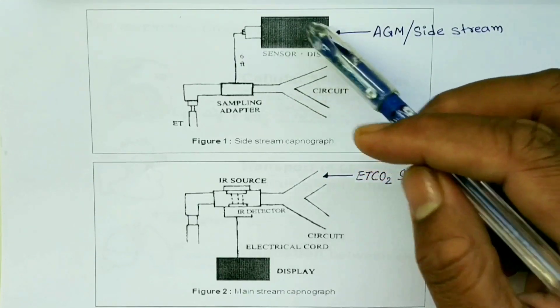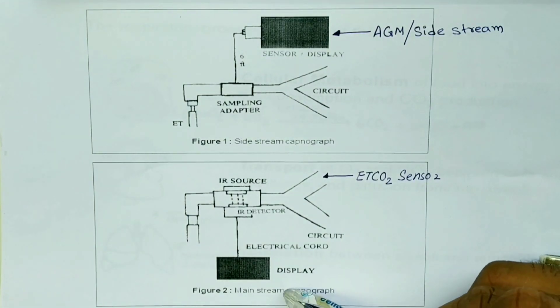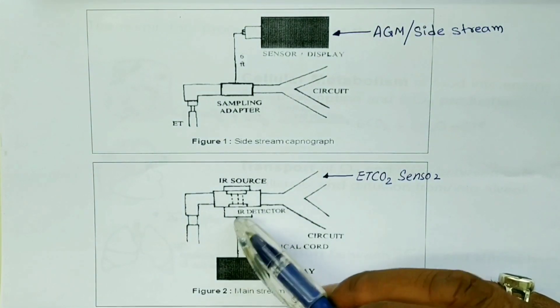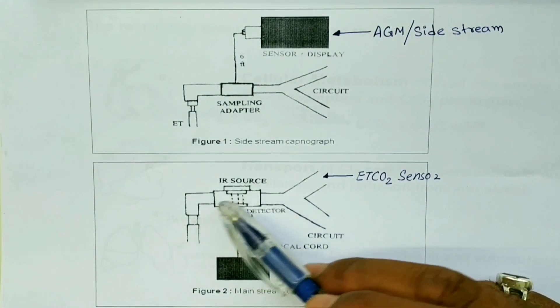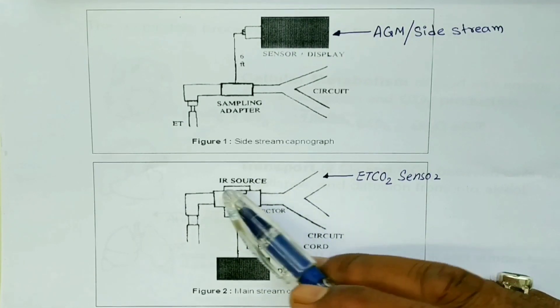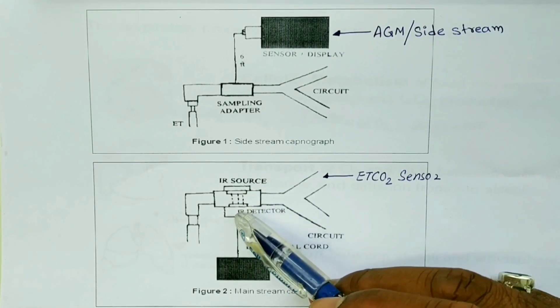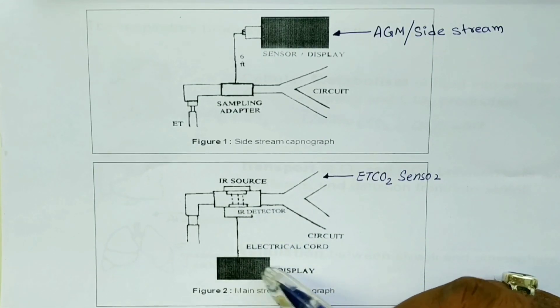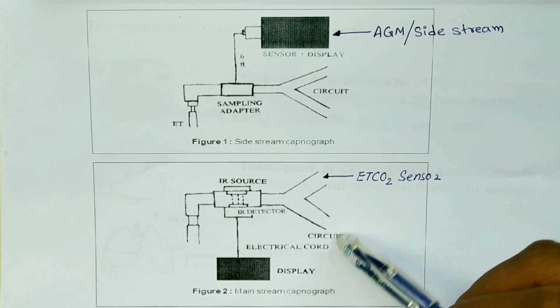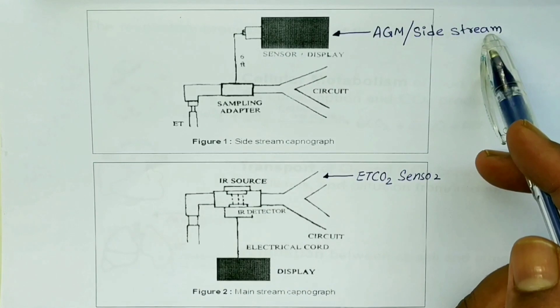In mainstream ET CO2, the ET CO2 sensor is directly over the ET tube. That is, the IR source, the infrared source, and the infrared detector are on the ET tube, and there signal transmission and reception takes place. Then it gives the data to the main recorder and displays the ET CO2 values. This is the ET CO2 sensor and this is AGM or side stream method.